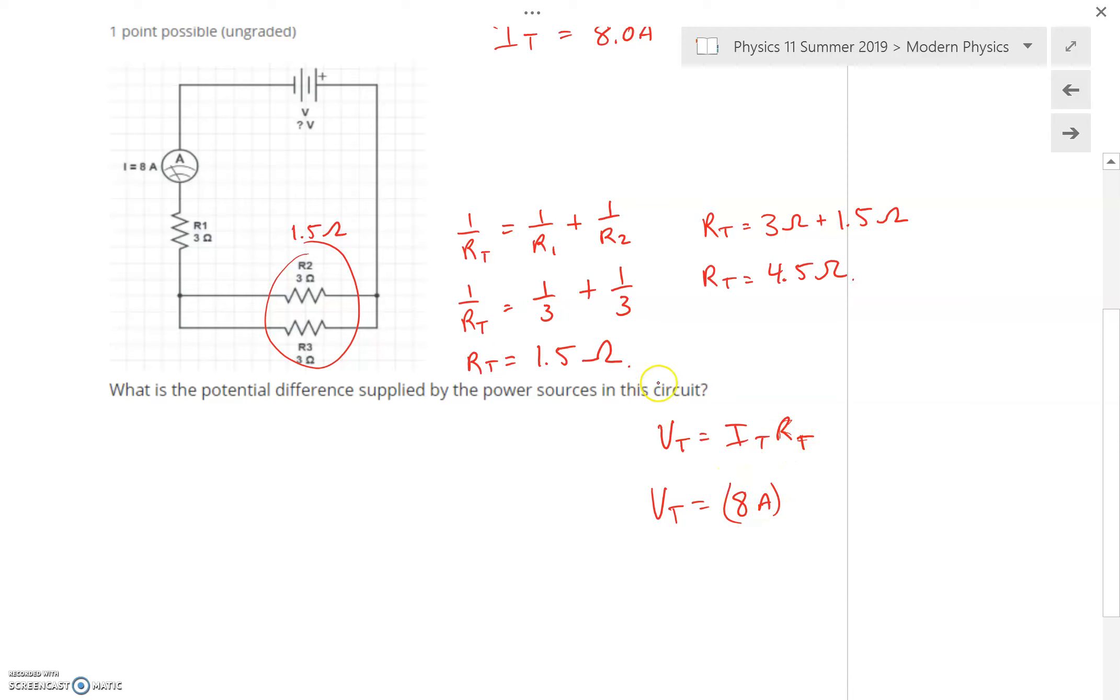Calculating that out, the total voltage will be the product of those two, providing us with 36 volts. The voltage total here would be 36 volts to power this circuit.